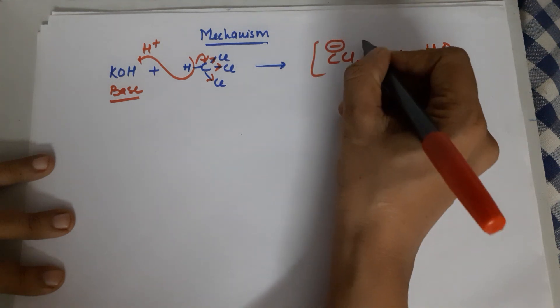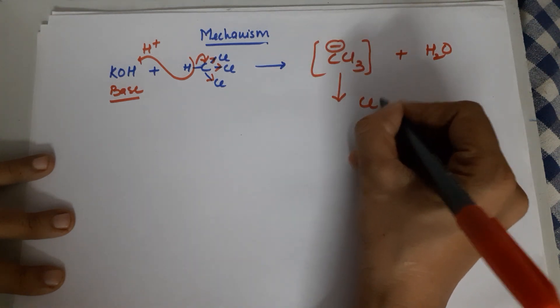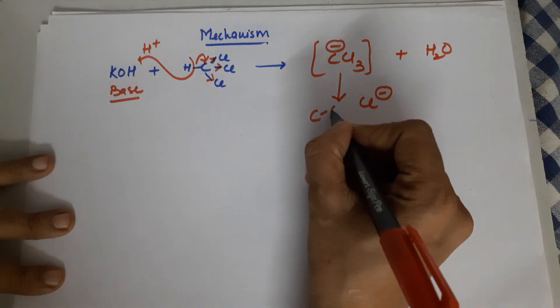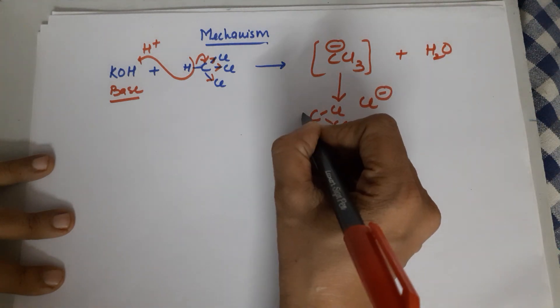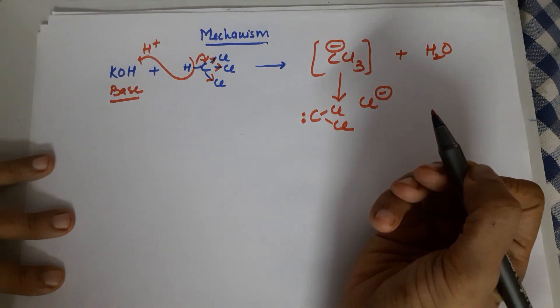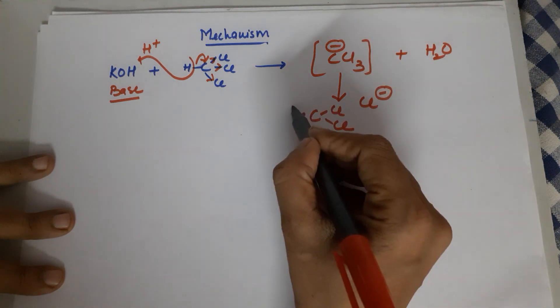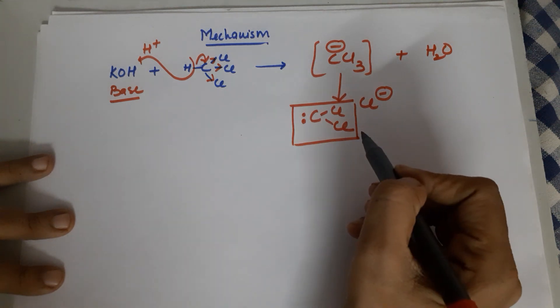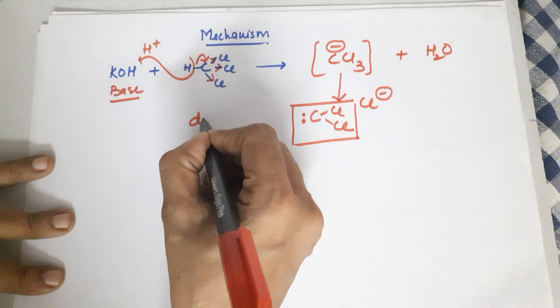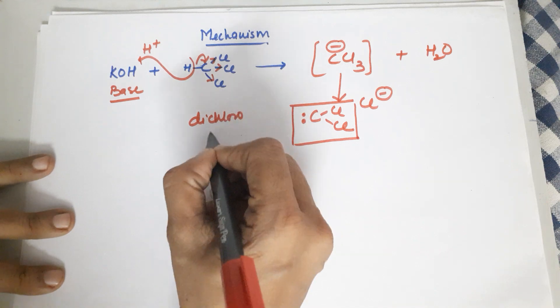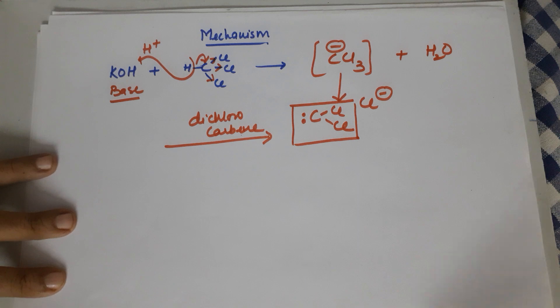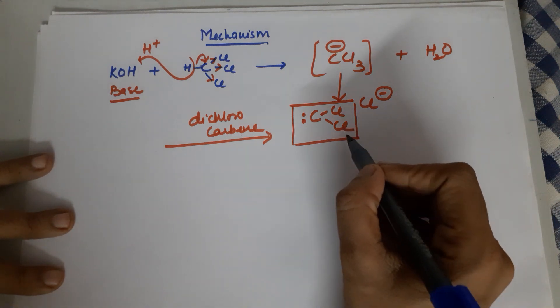This is an unstable entity. This loses the chloride ion and you are left with CCl2 along with a lone pair of electrons. So your CCl2 along with the lone pair of electrons is your dichlorocarbene.